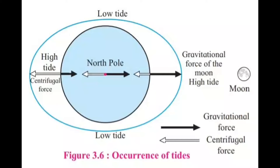See figure 3.6 and try to understand the location of high and low tides on the earth. First point: when there is a high tide at the 0 degree meridian, the 180 degree meridian also experiences high tide. Second point: the meridians that are at right angles to those having high tide will experience low tide at the same time. If it is high tide at 0 degree and 180 degree meridians, then at which meridians will low tide occur? The answer is: if it is high tide at 0 degree and 180 degree meridians, then it will be low tide at 90 degree east and 90 degree west meridians.